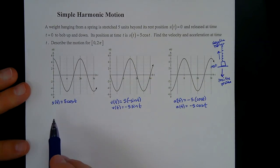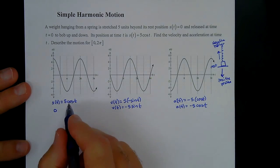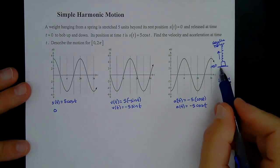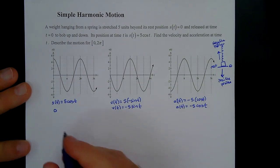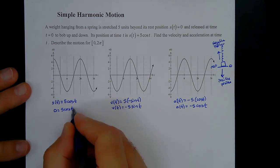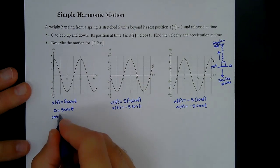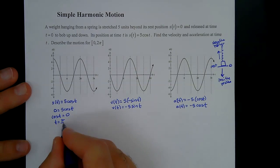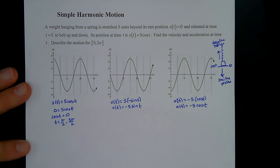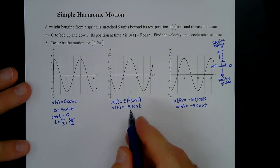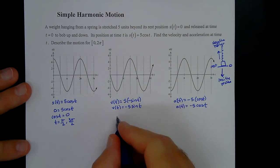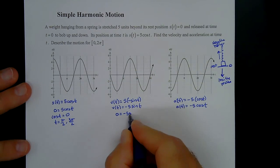We need to figure out when each function equals zero. For position, 5cos(t) = 0 means cos(t) = 0, which happens at t = π/2 and t = 3π/2. For velocity, we set −5sin(t) = 0, so sin(t) = 0, which happens at t = 0, π, and 2π.